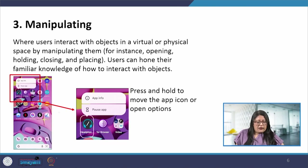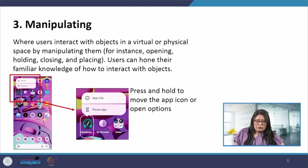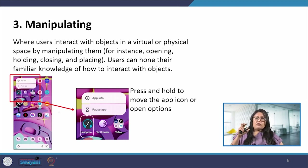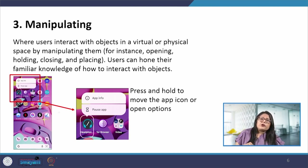Another interaction type is manipulating, where users interact with objects in a virtual or physical space by manipulating them — for example, opening, holding, closing, and placing objects. Users can improve their knowledge of how to interact with objects. On a mobile phone, when the screen is full and we want to combine similar apps, we hold them and place them in a folder, giving the user flexibility to manipulate the interface.